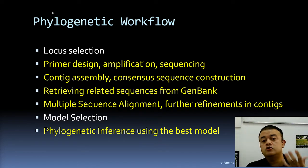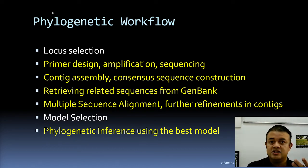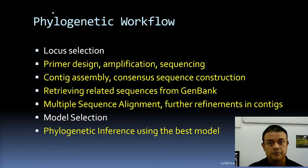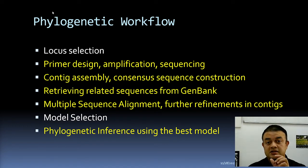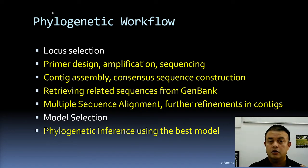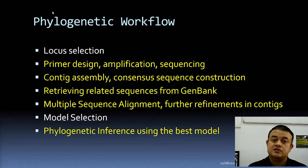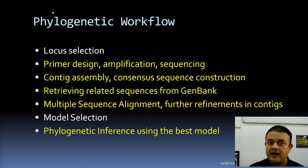Once you have the consensus sequence, you can submit it to GenBank and retrieve related sequences. Before submitting to GenBank using tools like Banklt or Sequin, you need to annotate properly. Annotation means marking which region is a gene, which is not, and for eukaryotes identifying introns, exons, coding sequences, intergenic spacer sequences, and primer binding sites. Annotation of functional genomic features is important before submission.